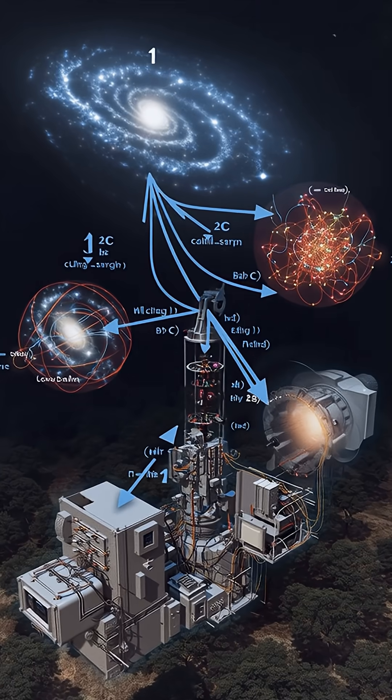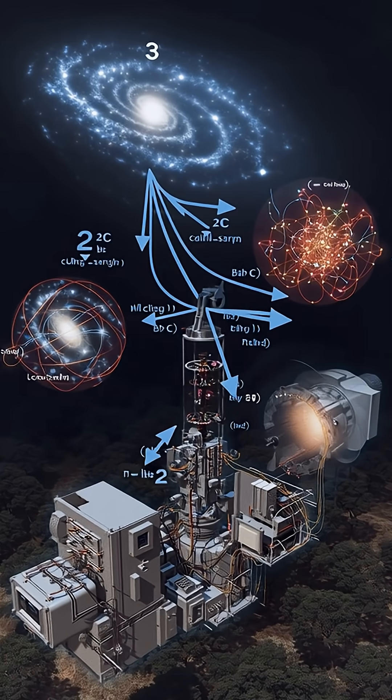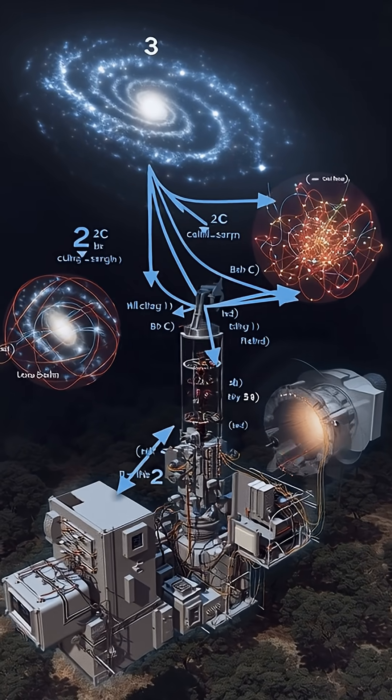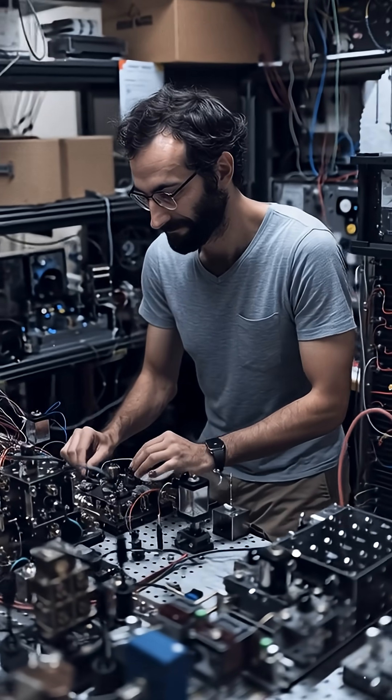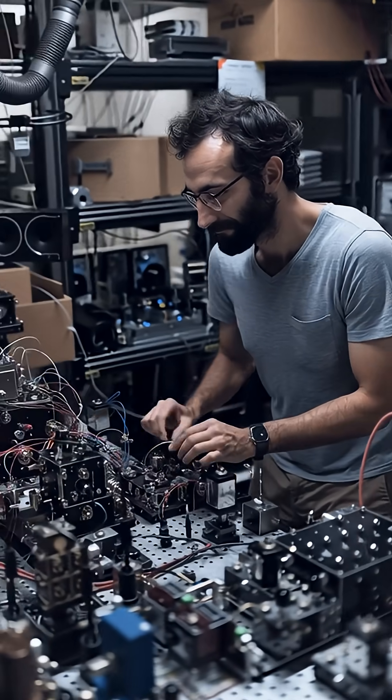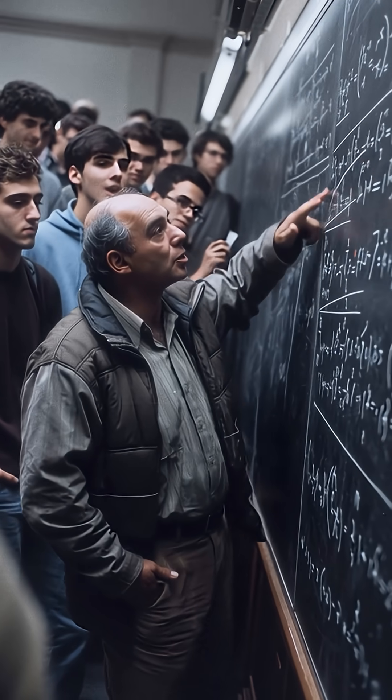A measurement on Alice's side, plus two bits of classical information sent to Bob, allow him to reconstruct the original quantum state on his particle while the original is destroyed. This satisfies the no-cloning theorem,